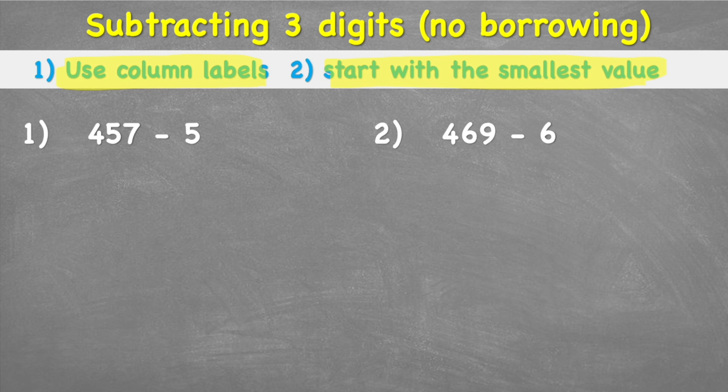So what method are we going to use? We're going to use what's called the column method. This might be the first time you've seen the column method, and the column method means that we're going to put our numbers in columns.